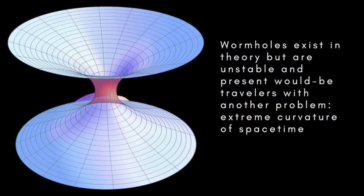Wormholes come about as solutions to the equations of Einstein's general theory of relativity. In fact, they crop up so readily in this way that some theorists are encouraged to think that real counterparts may eventually be found or fabricated and perhaps used for high-speed travel through space and time. However, a known property of wormholes is that they are highly unstable and would probably collapse instantly if even the tiniest amount of matter, such as a single atom, attempted to pass through them.